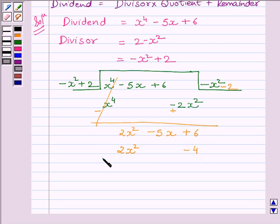Now again, we will subtract the like terms and bring down the rest of the terms. Always remember to change the signs while subtracting. We get minus 5x plus 10.